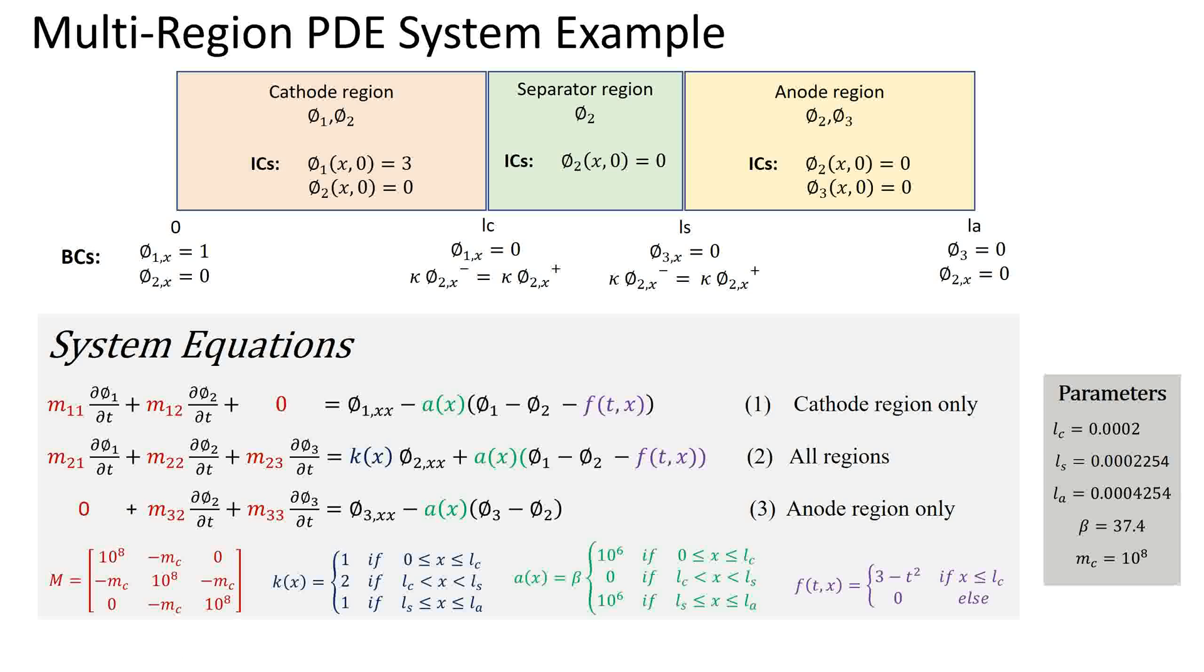The time derivatives of the state variables phi1, phi2, and phi3 are coupled by a mass matrix shown here in red. The three equations depend on the function A of x shown in green which takes a different value in each of the regions. Equations one and two also depend on the forcing term F of t and x shown in purple.